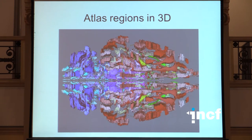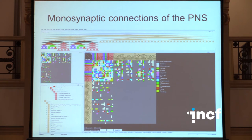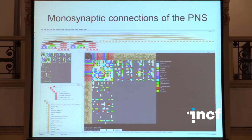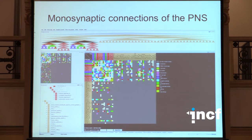A further important data type or data modality are connections between these regions. These connections are organized in a very deep hierarchy or ontology of up to 20 subdivisions of regions, and for this we have developed a filtering mechanism to navigate through this very large hierarchy with thousands of regions. The density of connectivity in central regions is quite large, but there also exist a significant number of connections from central regions to the periphery and from the peripheral organs to central regions.